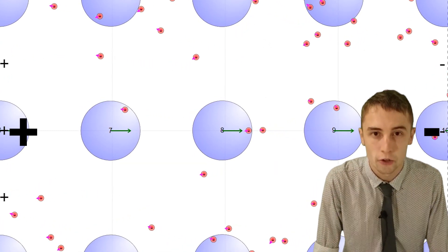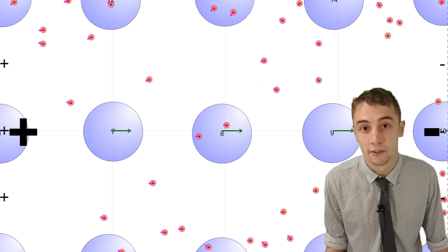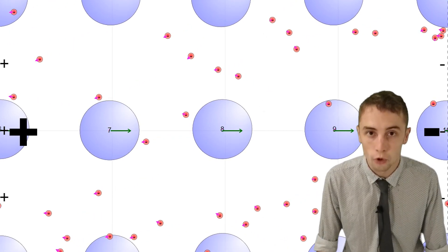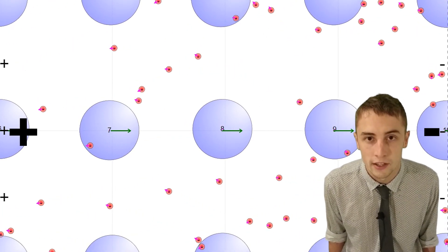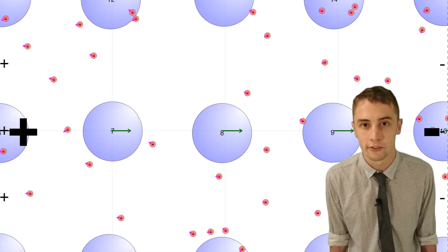Now there will be a very slow overall motion, a very slow overall movement towards this positive end of the supply, and this is called the drift velocity of these electrons.